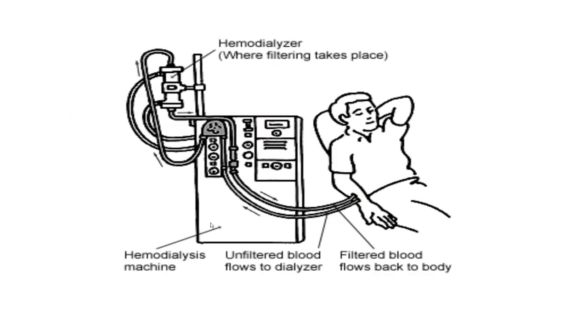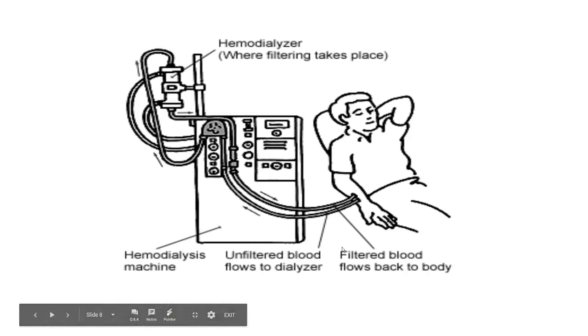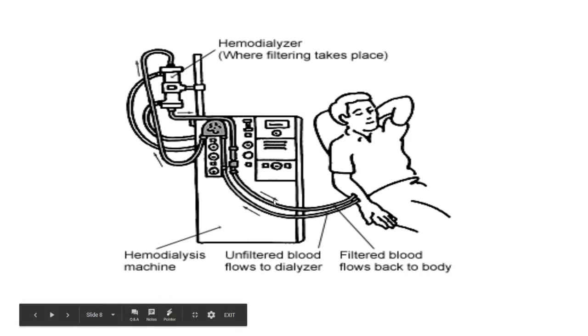Diagrammatically, this is the hemodialyzer where filtering takes place, and this is the hemodialysis machine. The unfiltered blood flows to the dialyzer as this arrow indicates, and the filtered blood flows back to the body as this arrow indicates. That is what hemodialysis is.